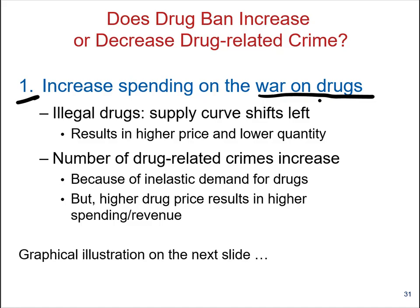Let's look at this from an economist's point of view. There will be a shift in the supply of illegal drugs because of the spending on the war on drugs — more police will be arresting suppliers or preventing them from selling. So the supply curve will shift left. The ultimate effect is a higher price of drugs and lower quantities available in the market.